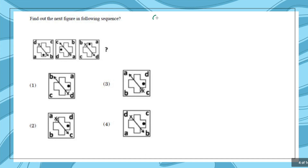This question was recently asked in the CSIR 2020 exam. It says: find the next figure of the following sequence. You are given figures one, two, and three; you have to find the fourth. First, see the pattern. The outside square is the same in all figures. The inside plus sign is also the same in all figures. What differs is: the sequence of A, B, C, D; the direction of the arrow; the tail of the arrow; and the position of the dot.